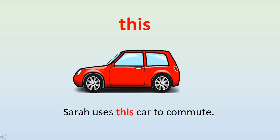The word is this. This is generally used for talking about somebody or something which is very close to you in time or space. For example, here you can see a picture — we would like to talk about this car. So we will say: Sarah uses this car to commute.